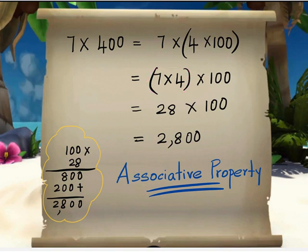7 times 4 is 28 and then times 100. So 28 times 100 becomes 2800. Let us multiply 28 times 100.